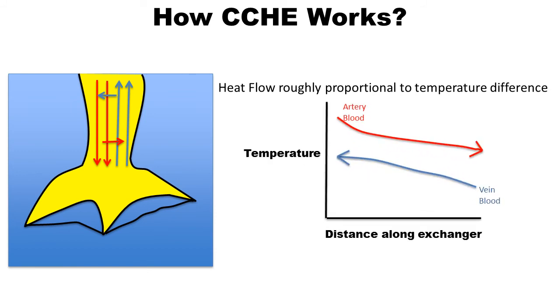The graph also shows the relationship between the blood in the arteries and veins and blood temperatures as they flow along the exchanger, each starting at opposite ends. Thank you for watching my video. Take care.